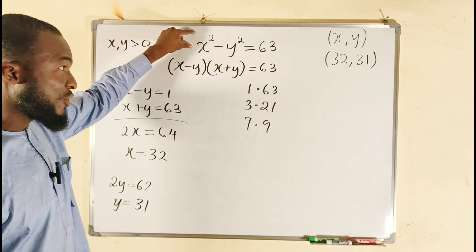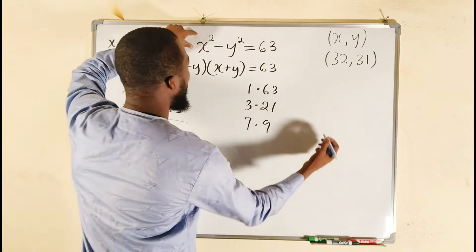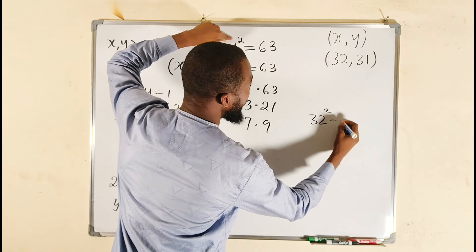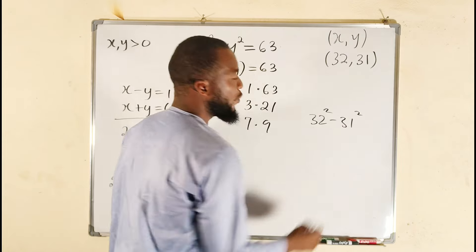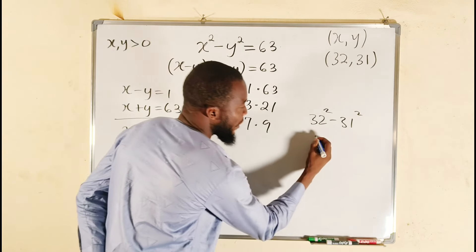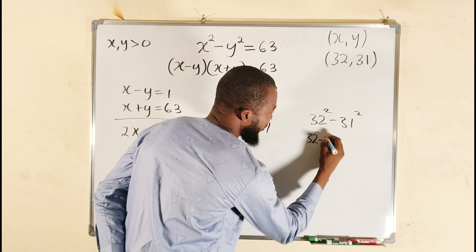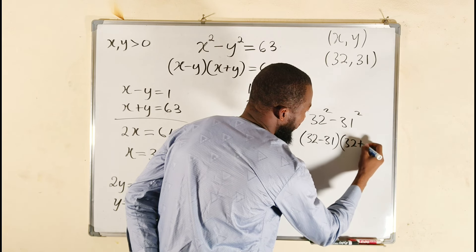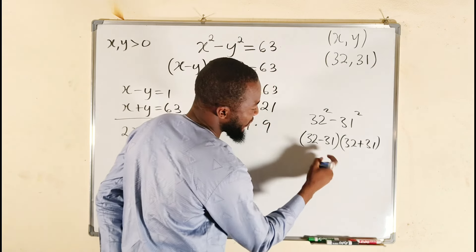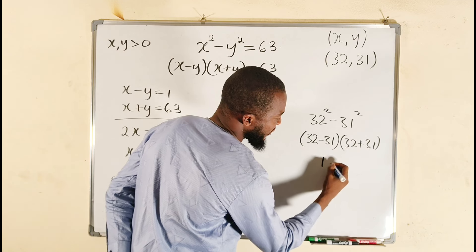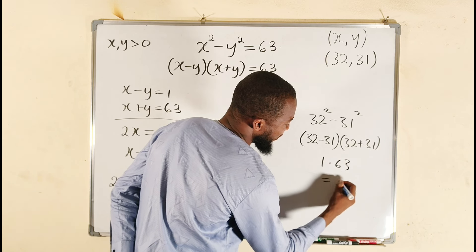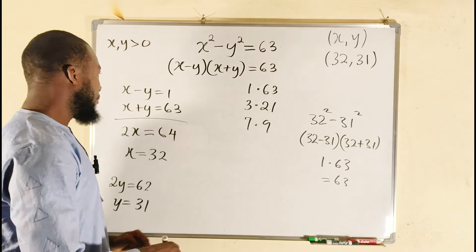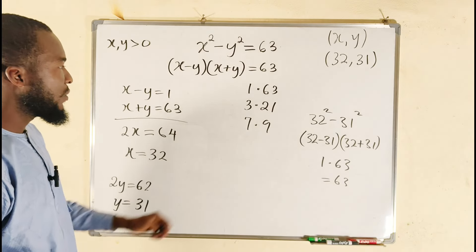Let's check this in the original equation: 32 squared minus 31 squared is a difference of two squares, which equals 32 minus 31 multiplied by 32 plus 31. That is 1 times 63, which equals 63. Confirmed — this solution is correct.